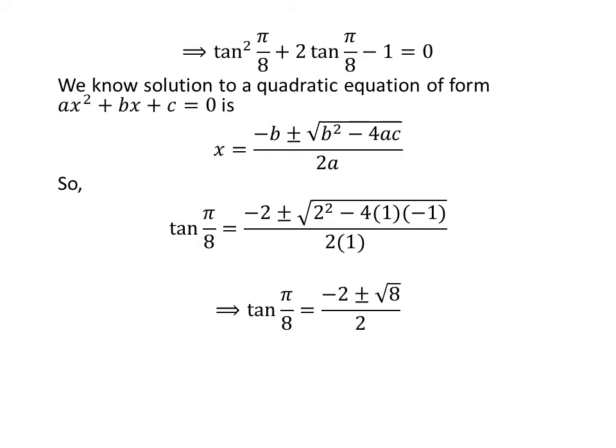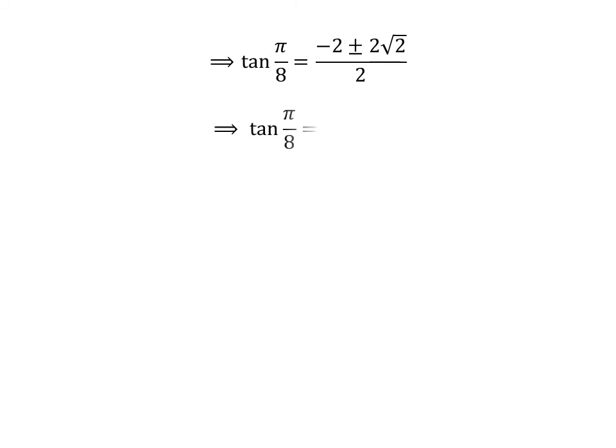Simplification of the equation gives us tangent of pi upon 8 is equal to minus 2 plus minus square root of 8 upon 2. We know square root of 8 is equal to 2 times square root of 2. We can see 2 is the common factor in the numerator. So cancelling out the common factor 2 in the numerator with 2 in the denominator, we get tangent of pi upon 8 is equal to minus 1 plus minus square root of 2.